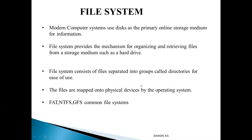The most common file systems used in real time are the FAT (file allocation table), used in older versions of Windows, and NTFS, used in many versions of Windows like Windows 7, 8, 10, XP, and Vista, as well as Linux and BSD operating systems. Another common file system is the Global File System, a shared disk file system supported by Linux computer clusters.